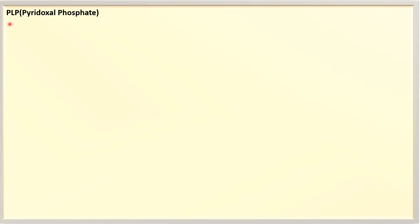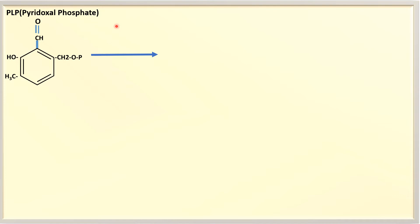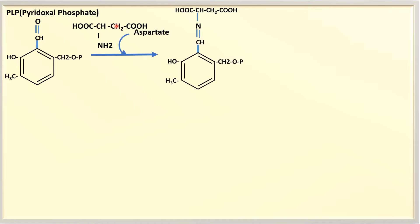Here you can see that PLP stands for pyridoxal phosphate. It is called pyridoxal because it contains an aldehyde (CHO) group. When the first substrate aspartate enters, an aldimine structure is formed — the aldehyde's oxygen is replaced by nitrogen, giving the aldimine.